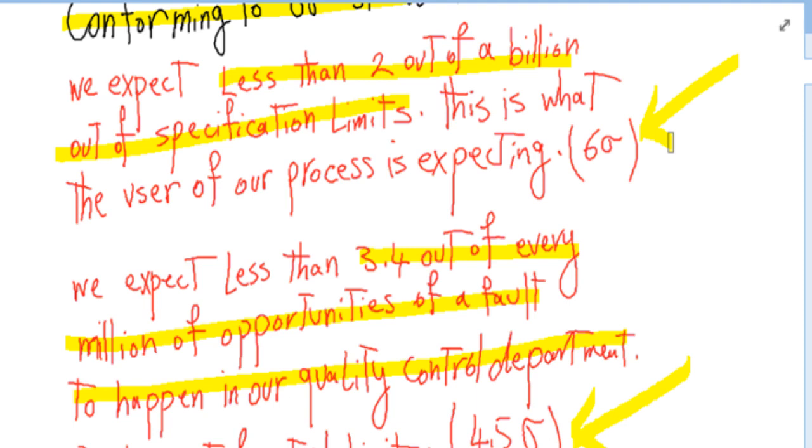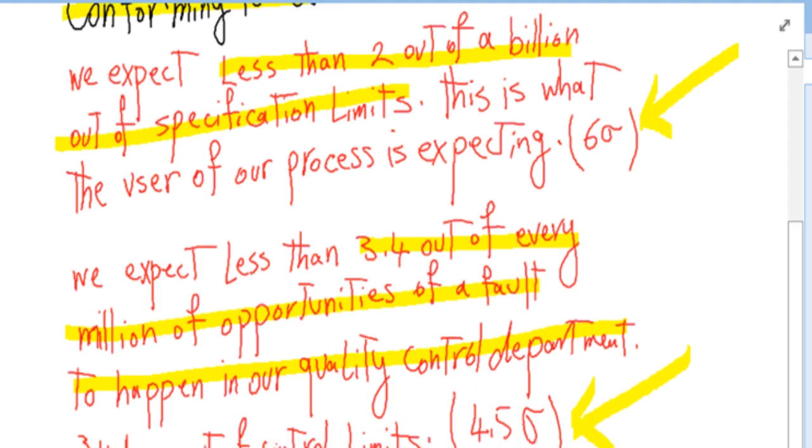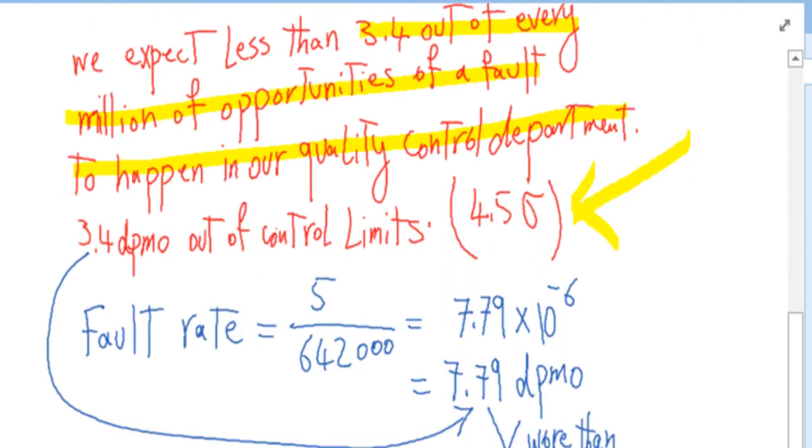The control limits in the control department are 4.5 standard deviations compared to the variations that our process is showing.